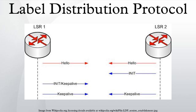LDP can be used to distribute the inner label and outer label in MPLS. For inner label distribution, targeted LDP is used. LDP and TLDP discovery runs on UDP port 646, and the session is built on TCP port 646. During the discovery phase, hello packets are sent on UDP port 646 to the all-routers-on-subnet group multicast address. However, TLDP unicasts the hello packets to the targeted neighbor's address.